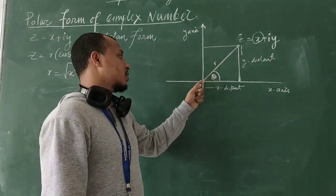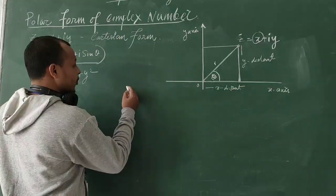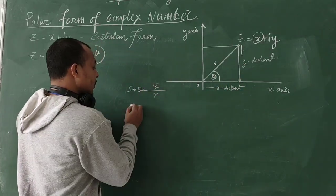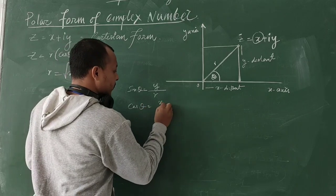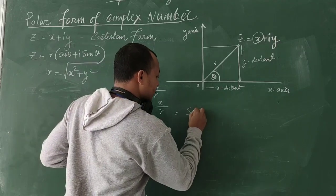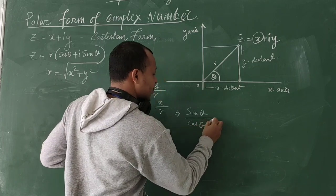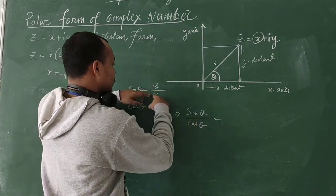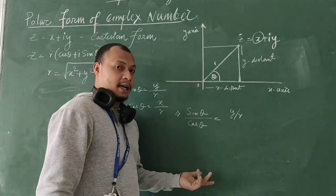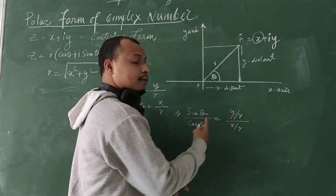We know sinθ = Y/R and cosθ = X/R. Dividing sinθ by cosθ gives sinθ/cosθ = (Y/R)/(X/R). The R cancels, so sinθ/cosθ = Y/X.